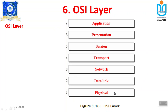The correct order of the 7 OSI layers, starting from the bottom, is: Physical layer, Data Link layer, Network layer, Transport layer, Session layer, Presentation layer, and Application layer. This order must always be followed. I will now tell you the functionality of each and every layer.